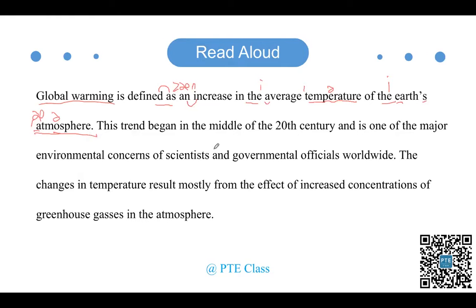然后接下来到第二句：this trend began in the middle of the 20th century，到这里停顿一下。注意 began，它是一个 'begin' 的音，不要读成 'begun'，不是 gun 的音，是 gan。in the middle of the 20th century，注意 middle of 连读。20th century 这个地方稍微有些难，注意 th 是舌头伸出来，然后后面 century 又是 s，舌头又进去。多练习，熟能生巧，等到舌头灵活了之后，读起来还是很自然的。